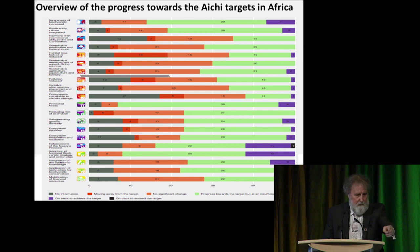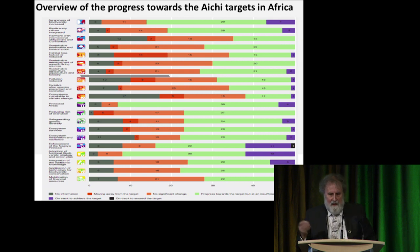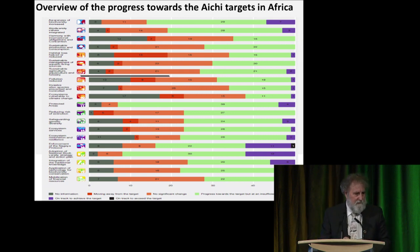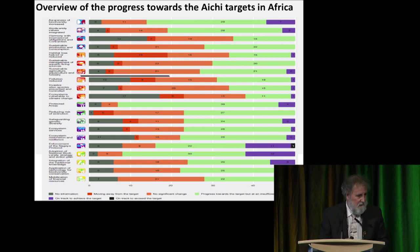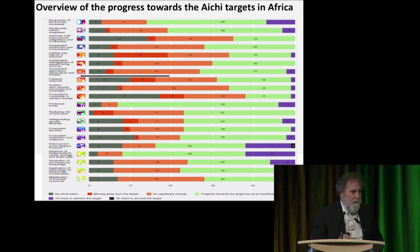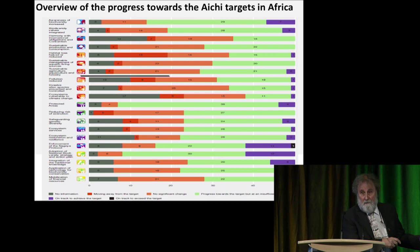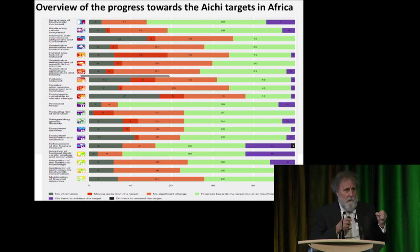Looking at Aichi target progress in Africa: blue means likely to meet the target — not very much blue. Green means making some progress. Orange and red means not making progress, and red means we're moving away from the target — doing worse today than in 2010 when we set these targets. If you look at the other three regions of the world, you get exactly the same picture.